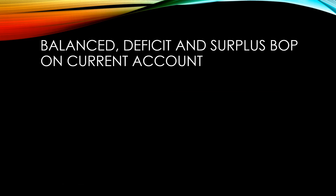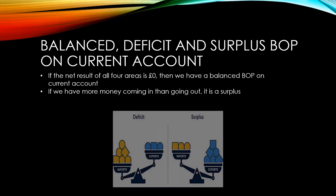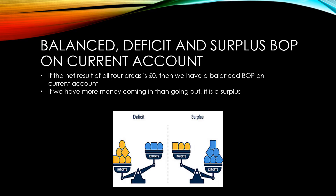If the net result of all four areas is exactly zero, then we have a balanced balance of payments on current account. If we end up having more money coming into the country than going out, we have a surplus balance of payments on current account. And if we have more money going out of the country than coming in, it's a deficit balance of payments on current account.